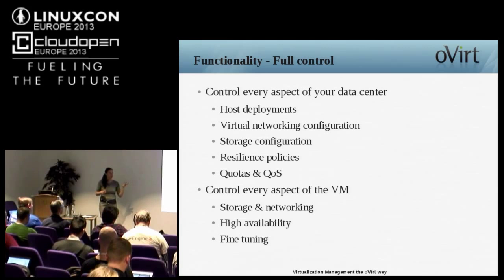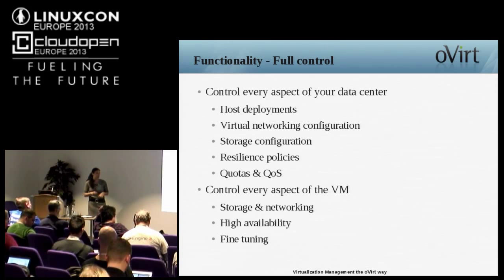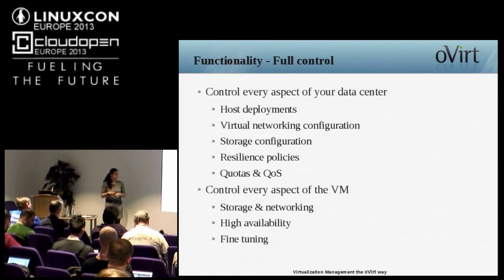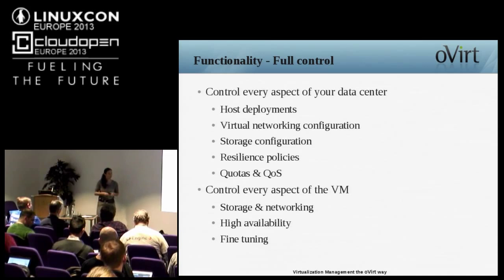You can also control quota and network quality of service, all at the data center level. On the virtual machine side: creating a new disk, attaching a disk, attaching a VM to a network — all basic stuff controlled within oVirt. You can also mark a VM as highly available — oVirt monitors your virtual machine, and in case of a hypervisor crash or VM crash, it will restart the VM on another node. Fine-tuning can be done at the VM level; you can pass parameters directly to the Linux kernel.